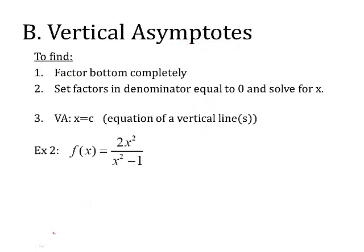Next thing we find are vertical asymptotes, and the rule to this is you set the bottom, or the denominator, you factor it completely. Then you set that denominator equal to 0 and solve it for x. And then you put your answer in this form. The vertical asymptote is x equals whatever you found. C is just a symbol for whatever number you find.